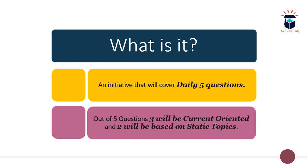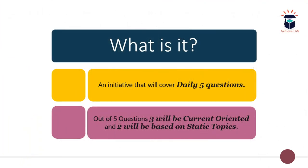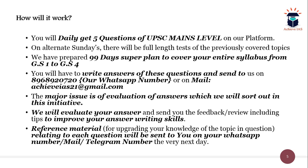We follow a dedicated 99-day super plan for coverage of static topics. As you have seen on this slide, tomorrow's topic is society — its salient features, diversity, and role of women and women's organizations. It is a systematic method: daily targets are given and static questions are framed from those targets. On alternate Sundays, we take full-length tests on previously covered topics. This 99-day super plan covers your entire syllabus from GS1 to GS4.